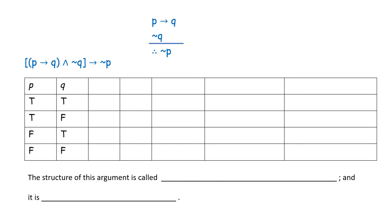We construct a truth table. The template has P — true, true, false, false — and Q — true, false, true, false. We compute ¬P: false, false, true, true. We compute ¬Q: false, true, false, true. For P → Q by definition: true, false, true, true.